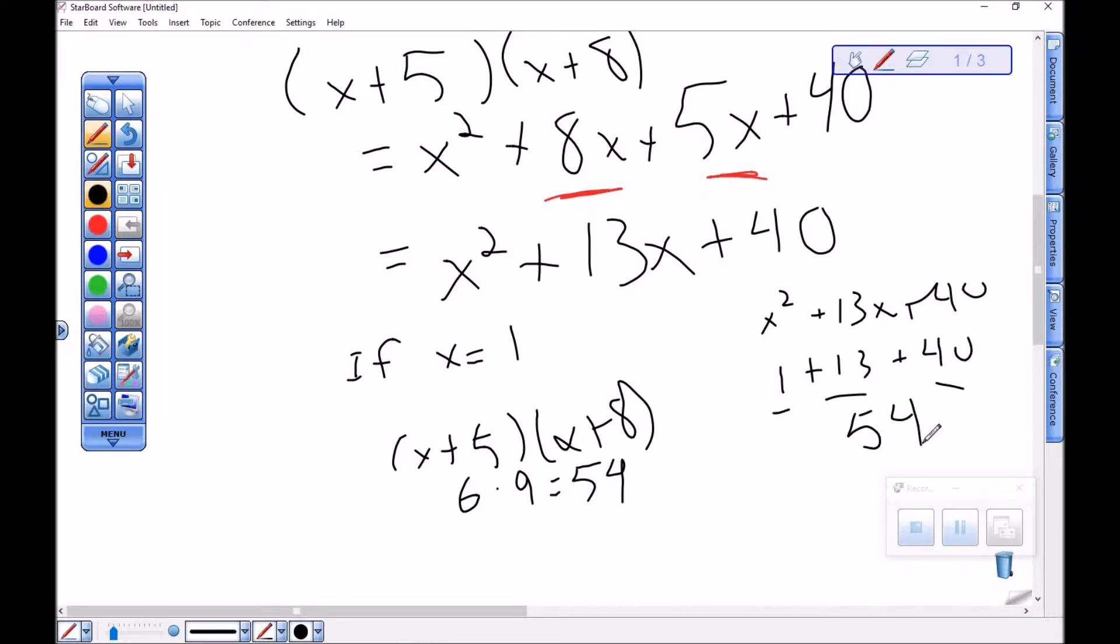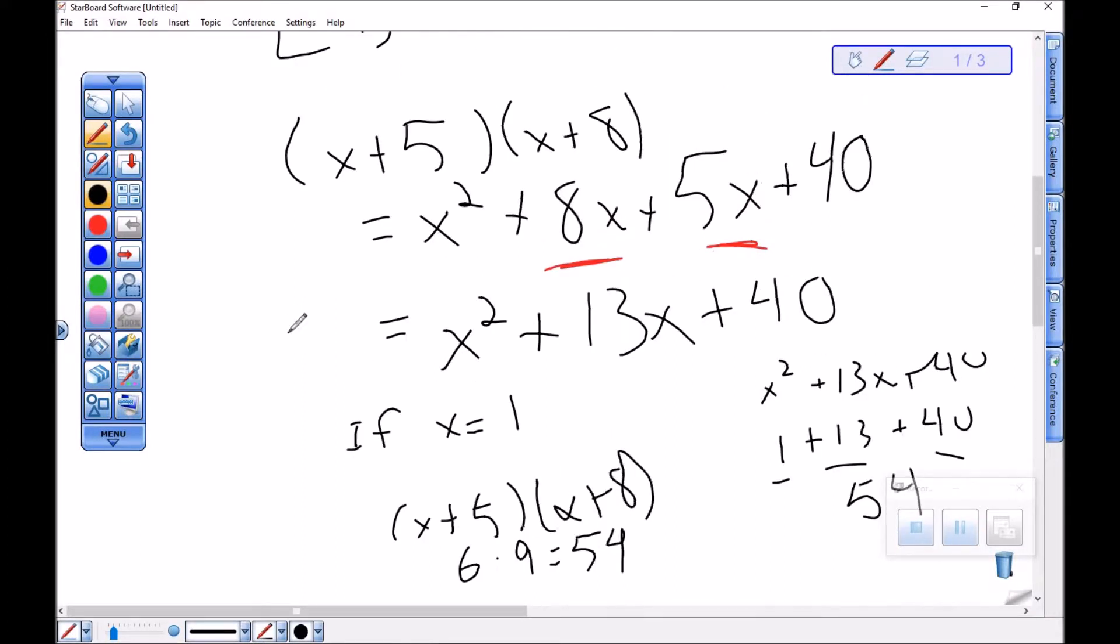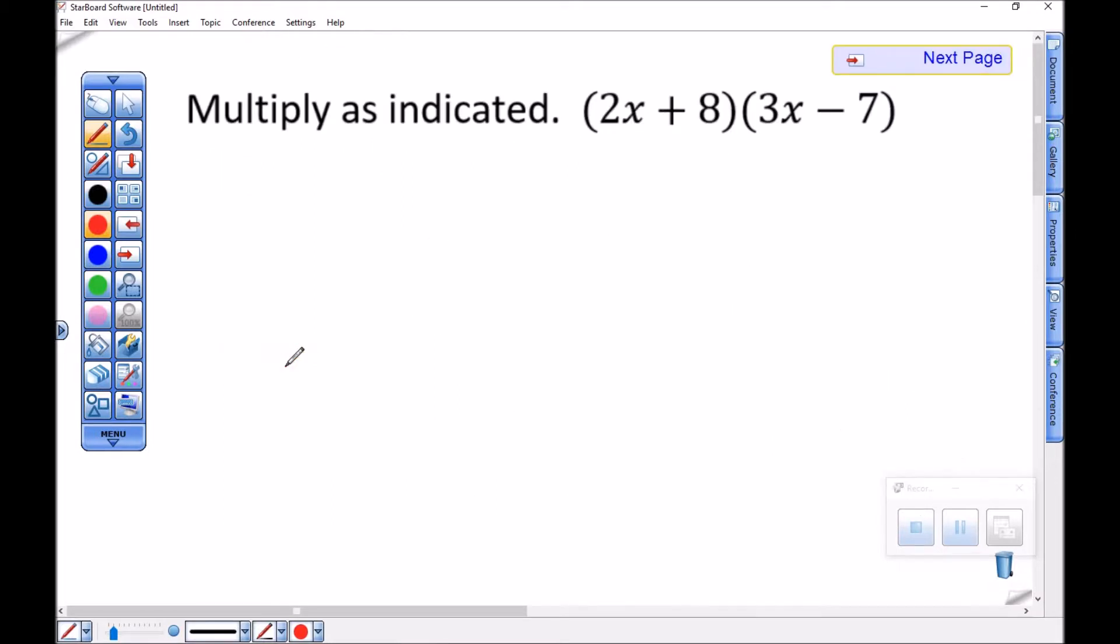Now it'll work for every value of x because these are just two different ways of writing the same thing. So x plus 5 times x plus 8 and x squared plus 13x plus 40 are different ways of writing the same guy. Let's just do a couple more examples quickly.